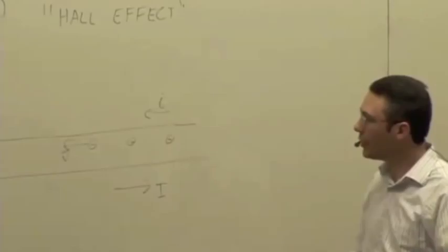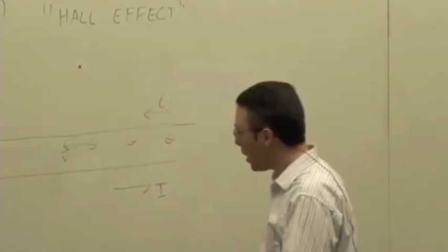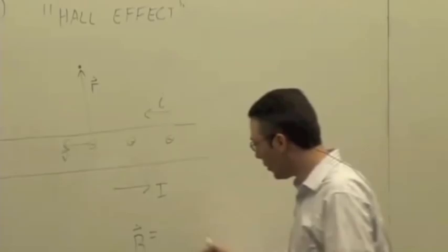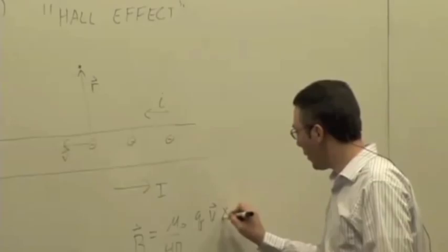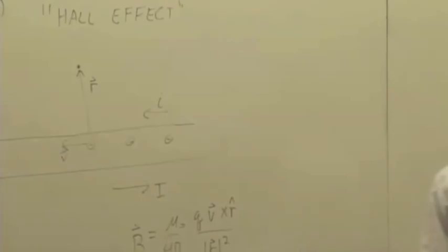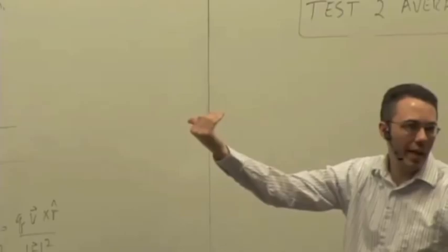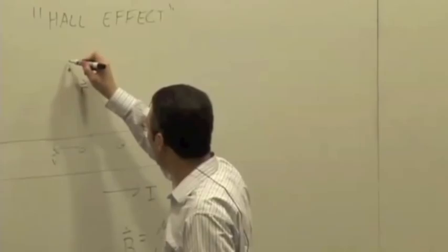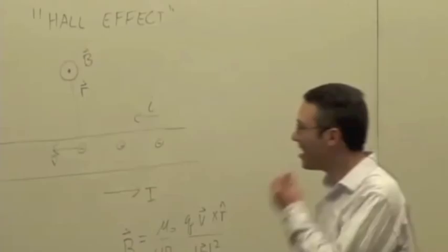The magnetic field of one of these moving electrons at a location above the wire — we have V, we have our R vector pointing up here. The magnetic field due to a moving charged particle is mu naught over 4 pi, qV cross r-hat over r squared. So V is pointing that way, cross r is up, thumb points in, but it's negative, so the magnetic field is going to be pointing out. A negatively charged particle moving to the left makes a magnetic field pointing out at this location.